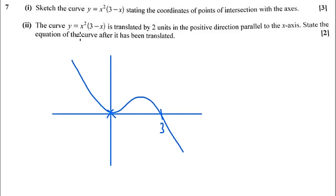Part two says that the curve is translated by two units in the positive direction parallel to the x-axis. So this whole curve is going to move two to the right.